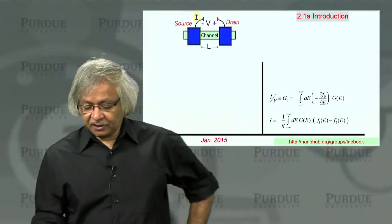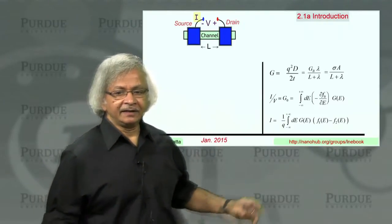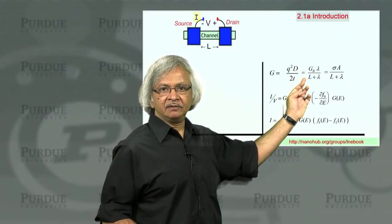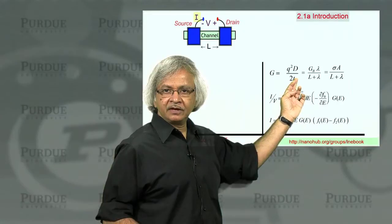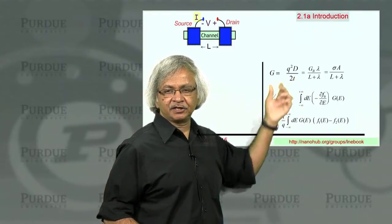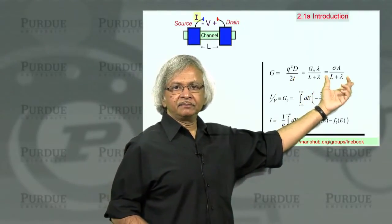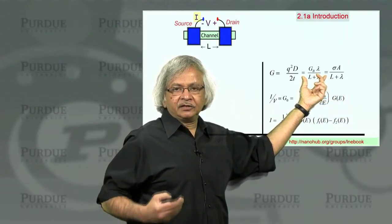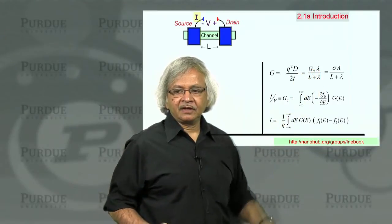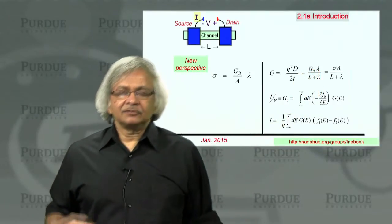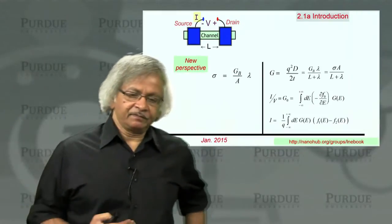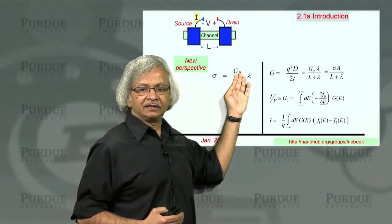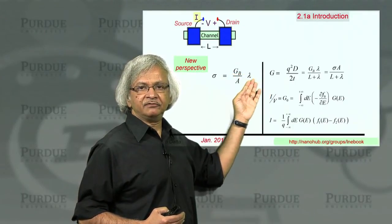What does the conductance function look like? Well, it depends on this density of states and this time that it takes for the electron to get through. And starting from that expression, we obtain this relationship of how the conductivity is related to this ballistic conductance. And that is what we call the new perspective, where we write conductivity as ballistic conductance times this mean free path.